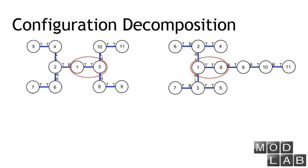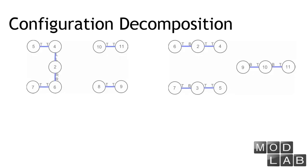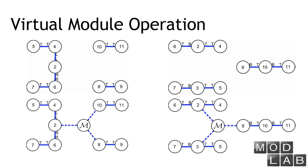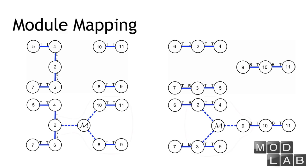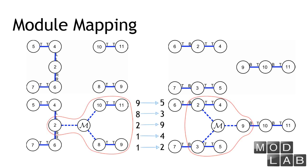Using this computation, we develop a configuration decomposition method. For example, the root module on the left is module 1, and the root module on the right is also module 1. Given module 1 mapped to module 1, the maximum common subconfiguration is encircled by the red line, and the mapping is 1 to 1 and 3 to 8. We then replace the maximum common subconfiguration with virtual modules and virtual connections. The configuration decomposition is then done again with respect to virtual module pairs to map more modules. This process is repeated until all modules are mapped. The reconfiguration actions can then be computed and executed by the hardware accordingly.